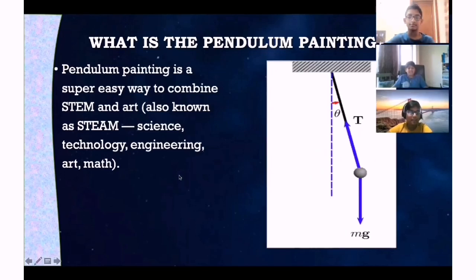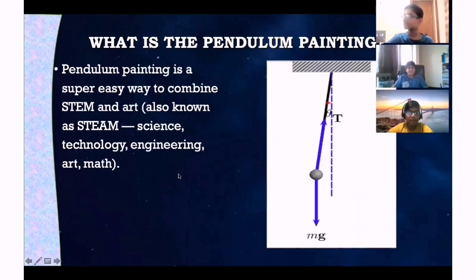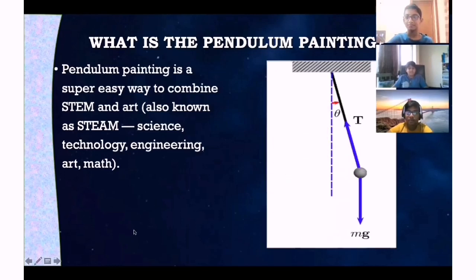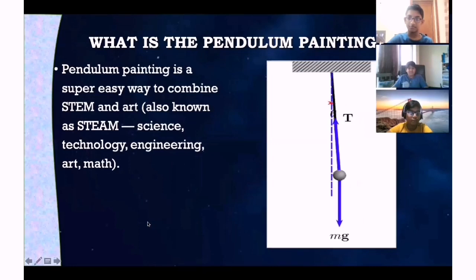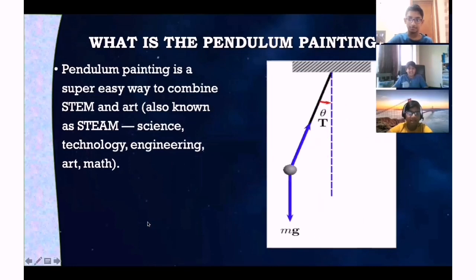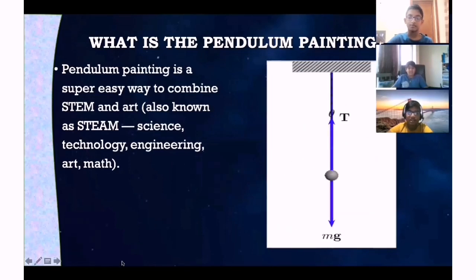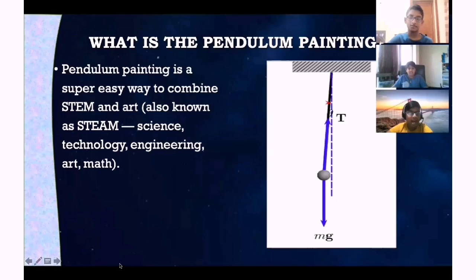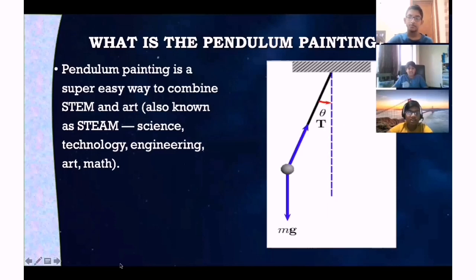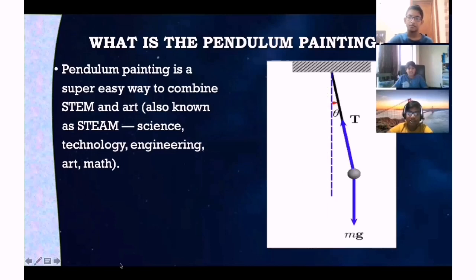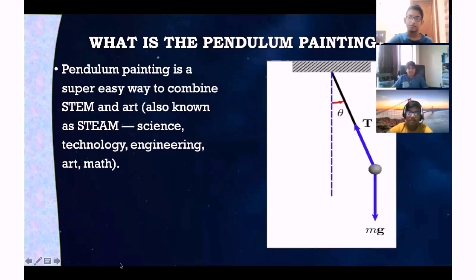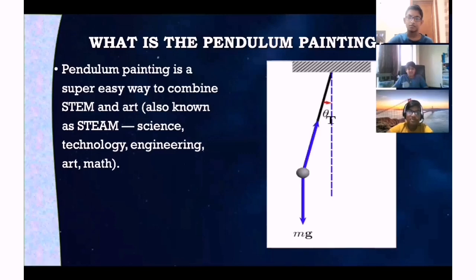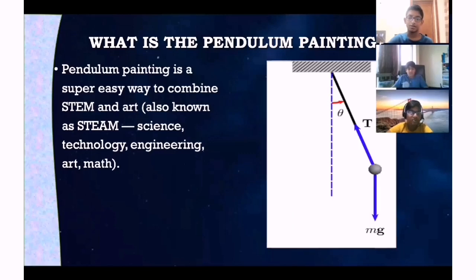The Science Behind Pendulum Painting: A pendulum is a fixed object hung from a point so it can swing freely back and forth due to the force of gravity. When discussing the concept with children, a great example to use is a swing. As the swing moves back and forth, it is demonstrating the physics of a pendulum, moving due to the force of gravity.